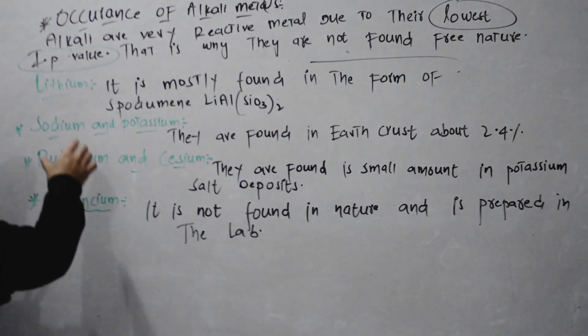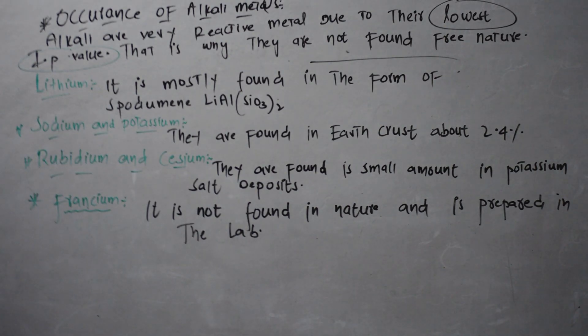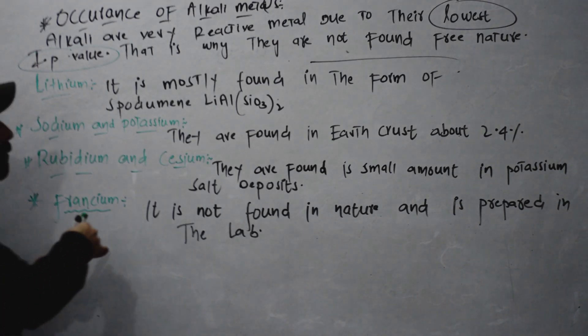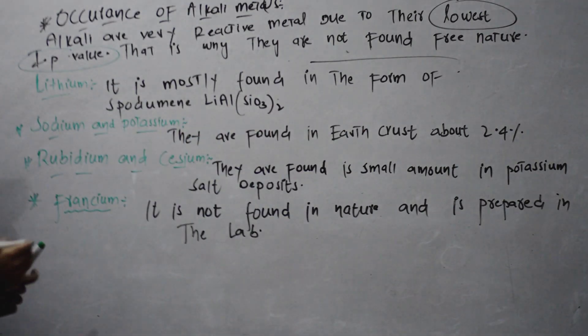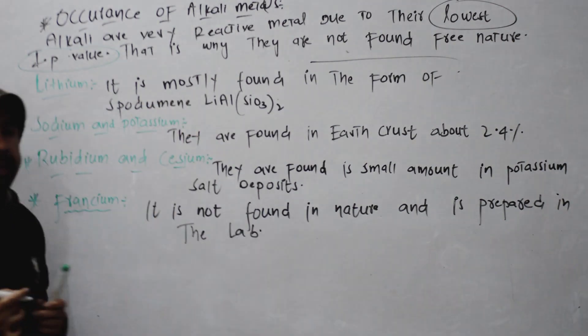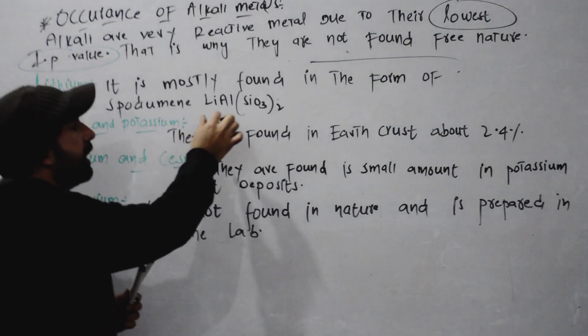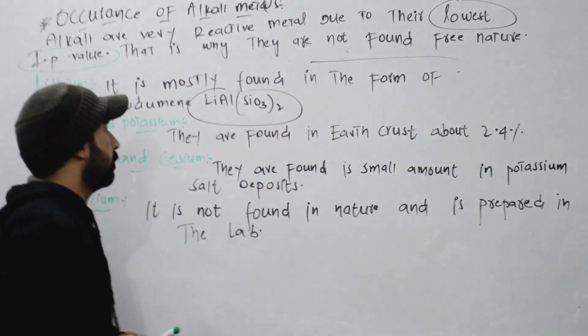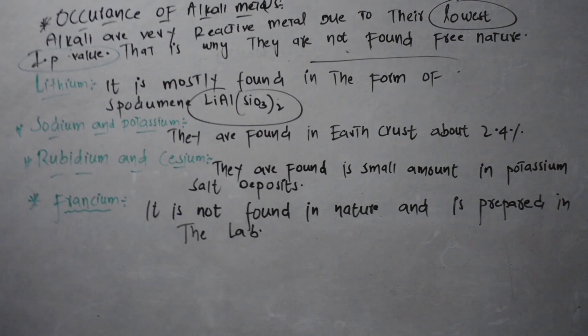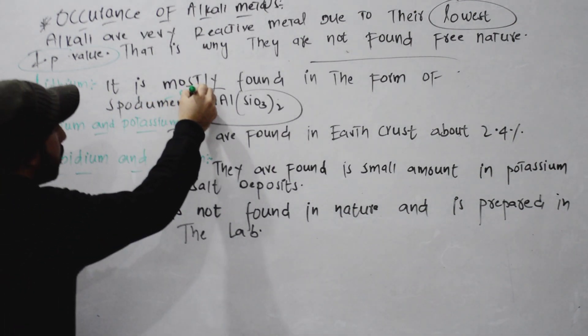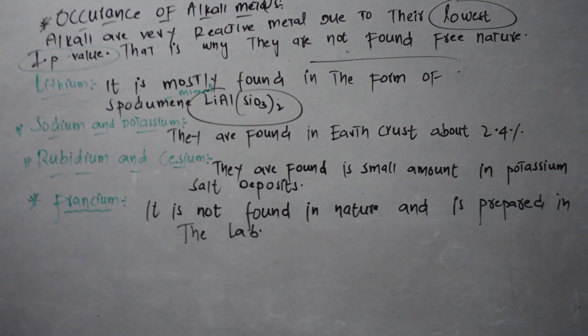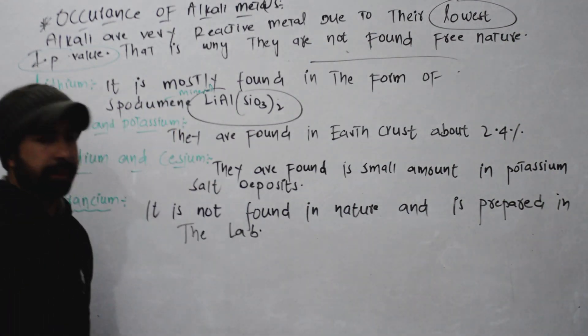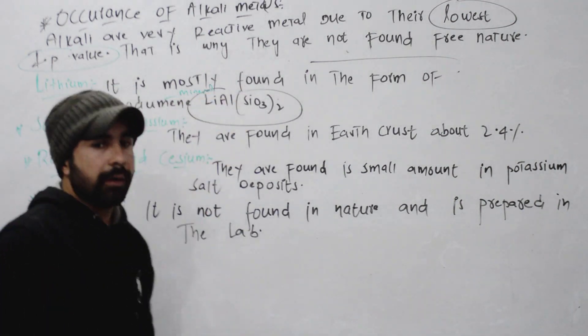First of all, lithium is mostly found in the form of spodumene LiAl(SiO3)2. They are found in earth's crust about 2.4%.